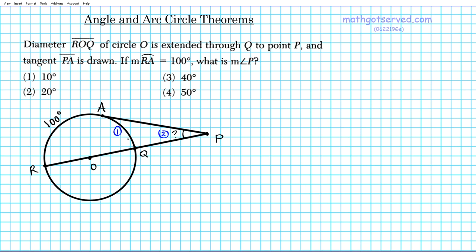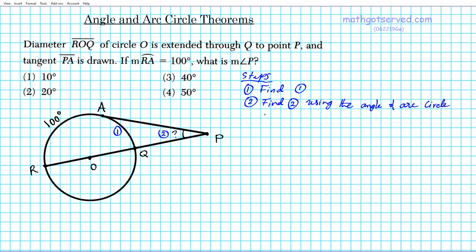The sequence of steps is as follows. Step 1: figure out the measure of arc AQ, since we know the measure of a full circle and we have half a circle from the diameter. Step 2: use our angle and arc circle theorems, since we have a tangent line and a secant line, to find the measure of angle P.